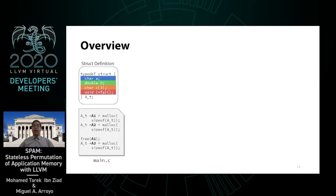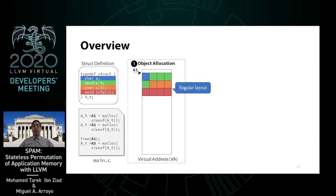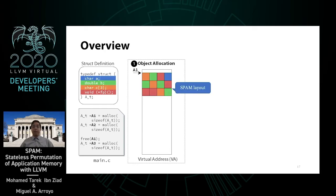Now let's see how SPAM works. We start with the struct definition shown on the left. In the case of a regular malloc call, this is how struct instance A1 will be laid out in memory. The different fields, represented by four colors, will have the same order as they appear in source code. That gives an attacker the opportunity to override the function pointer using an overflow in buffer C, just because they are adjacent in memory. With SPAM in place, the allocation data will be permuted, forcing the attacker to guess which order to use to override the function pointer.